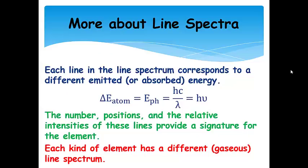These lines in the line spectrum correspond to a different emitted or absorbed energy. Light is emitted or absorbed as photons, and this causes a transition between two energy states—the change in energy of the atom. It either goes from a higher energy state to a lower energy state in emission, or from a lower to a higher when it absorbs energy.